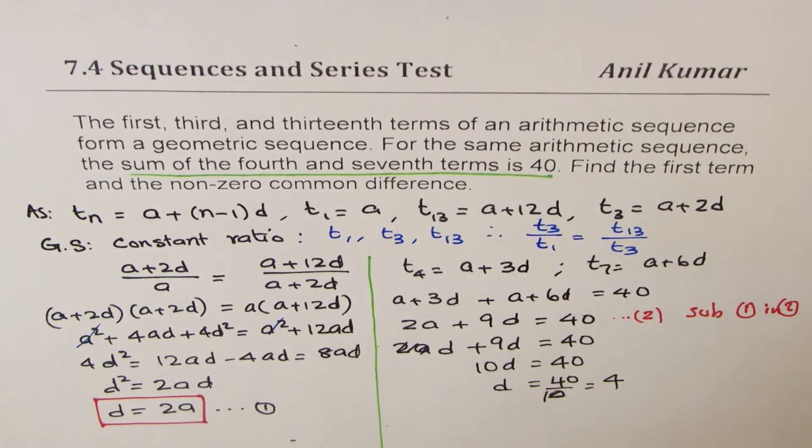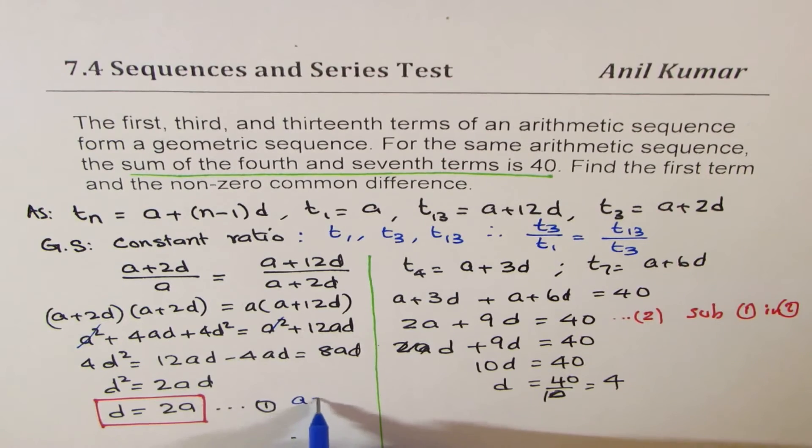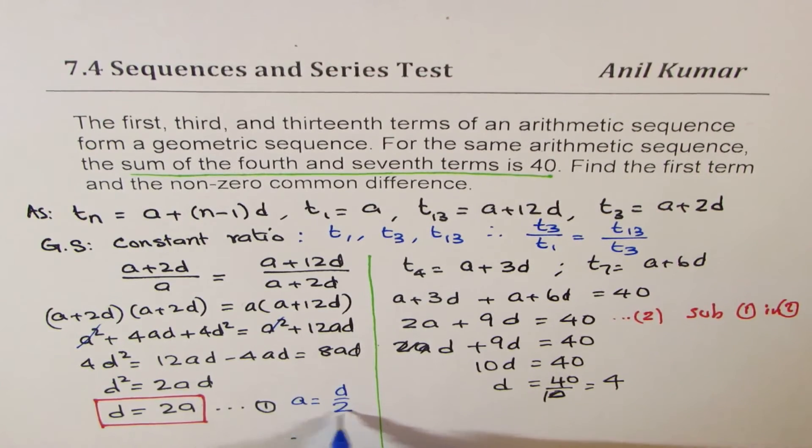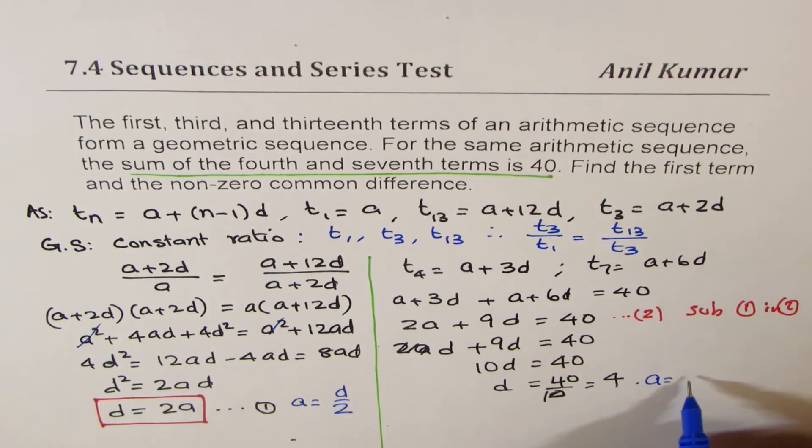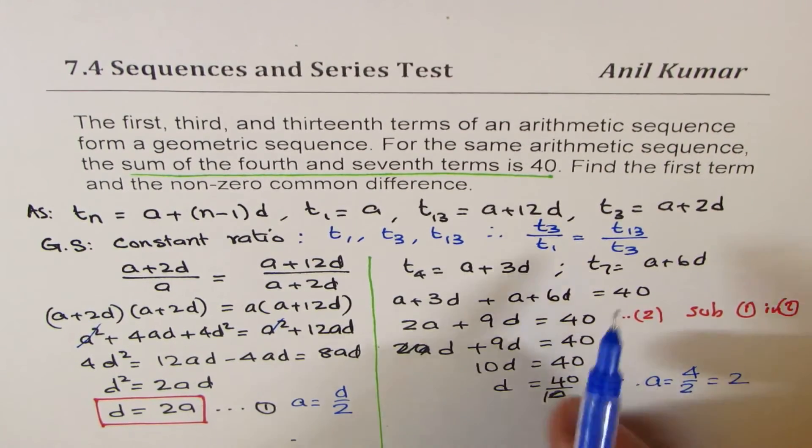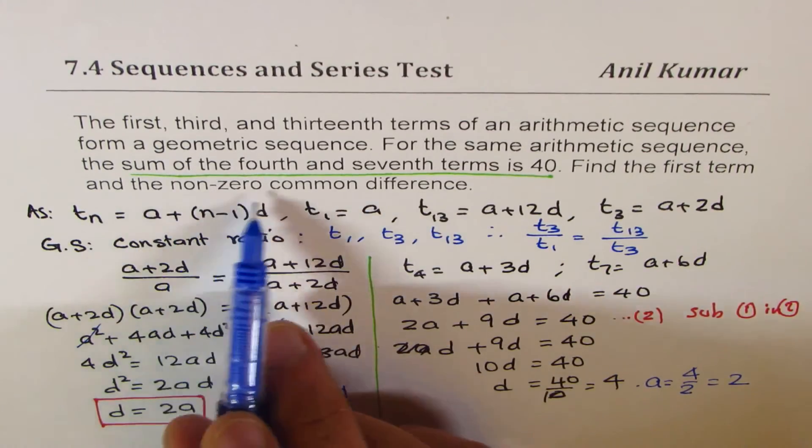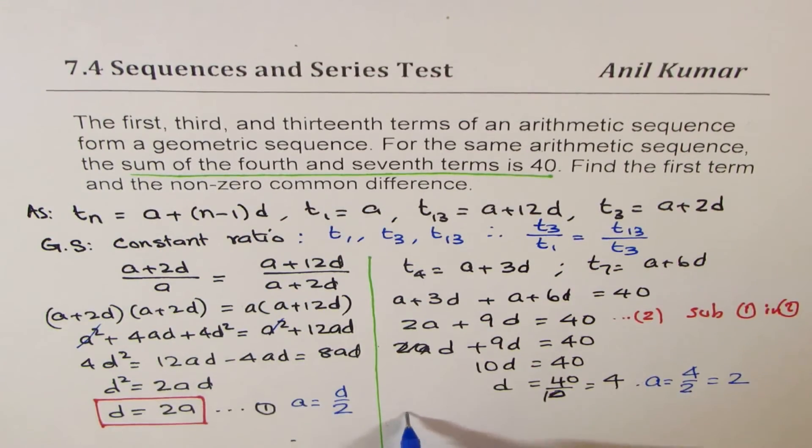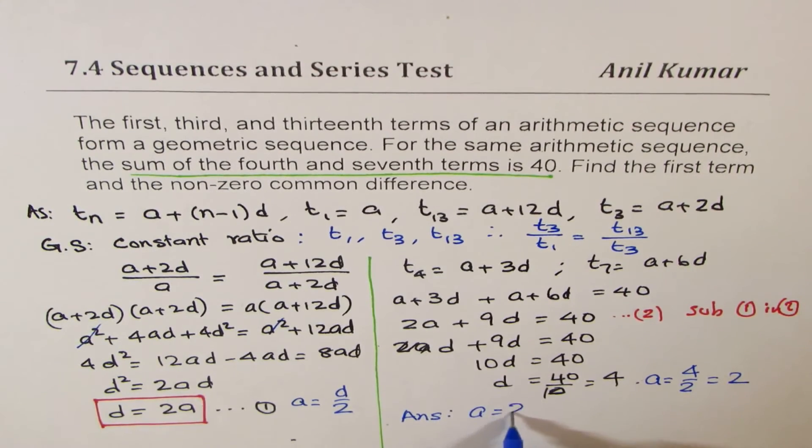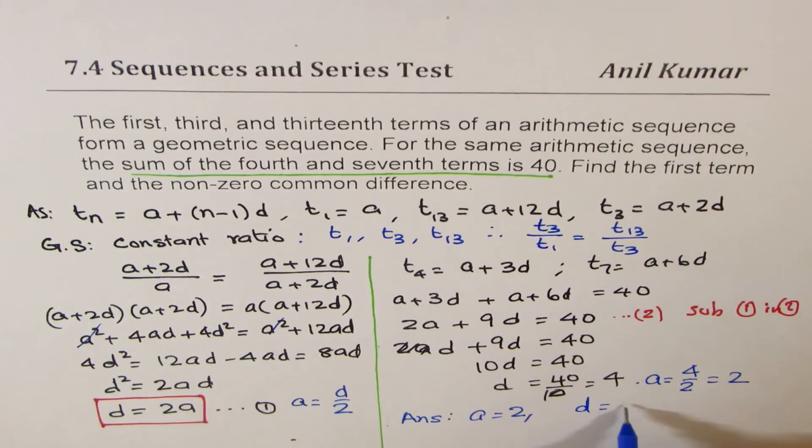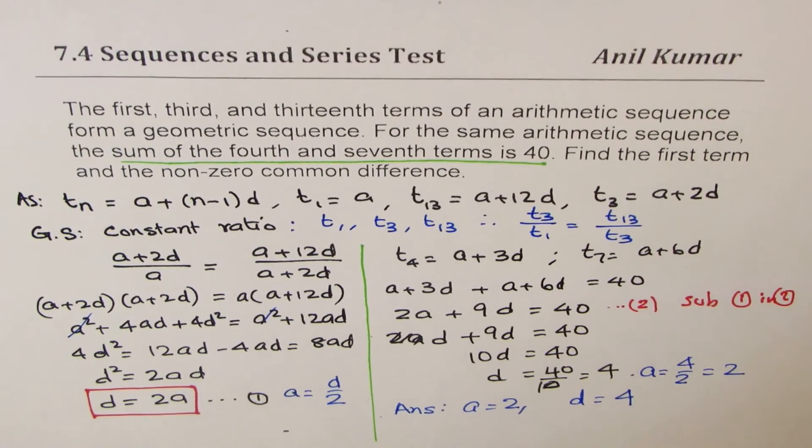So you could actually rearrange this and write a is d over 2. So we can say this implies that a is 4 over 2, which is 2. So our answer is: first term a is 2, and the common difference d is 4.